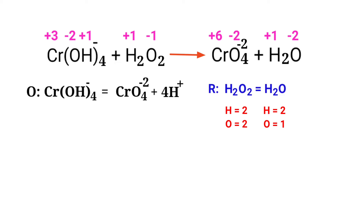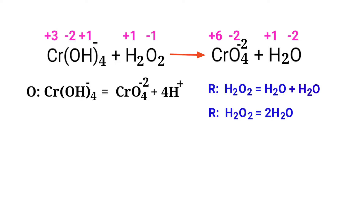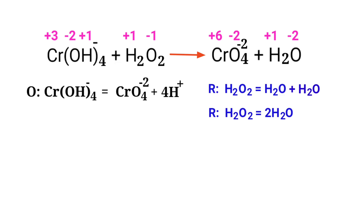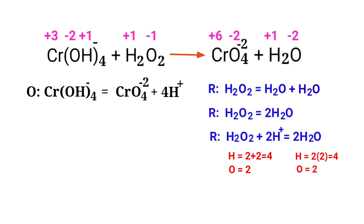Now balance the number of atoms in the reduction half reaction. To balance the oxygen atoms, you can produce water molecules. The oxygen atoms are balanced. Now to balance the hydrogen atoms, you can produce H⁺ ions. Now the number of atoms are balanced in the reduction half reaction.